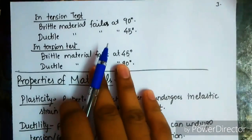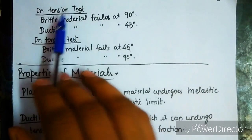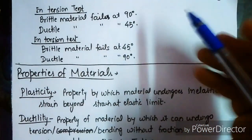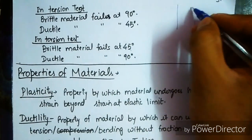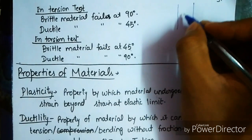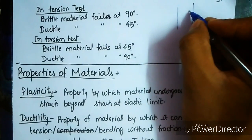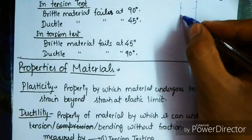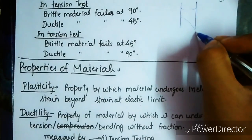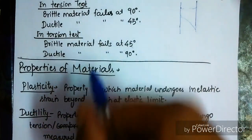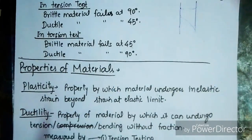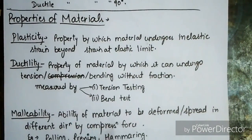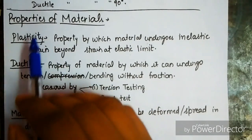In a tension test, brittle material fails at 90 degrees and ductile material fails at 45 degrees. In a torsion test, the failure angles are the reverse of this.